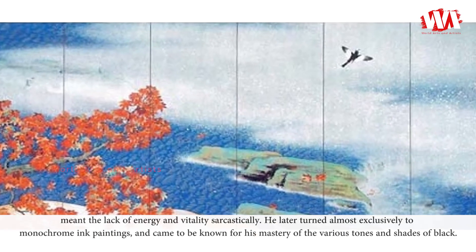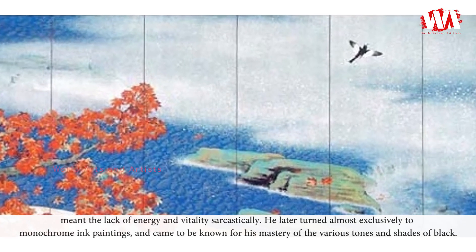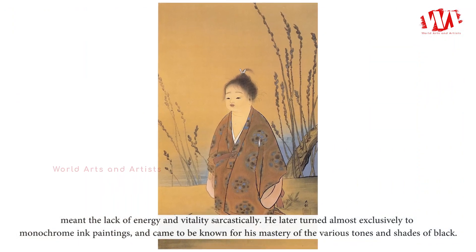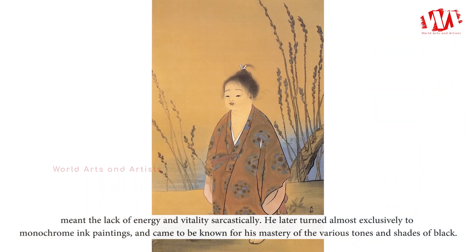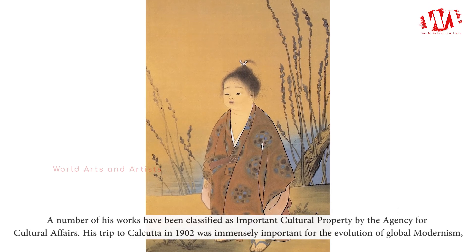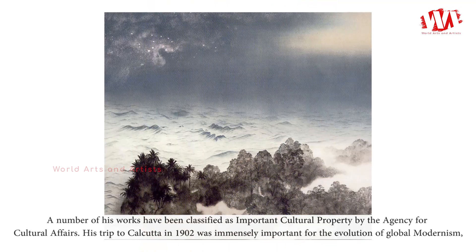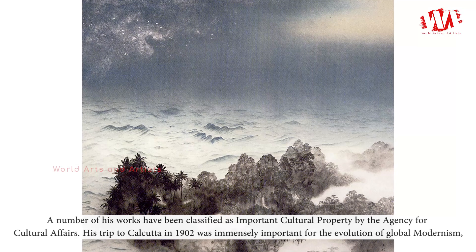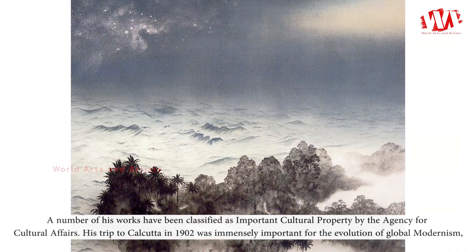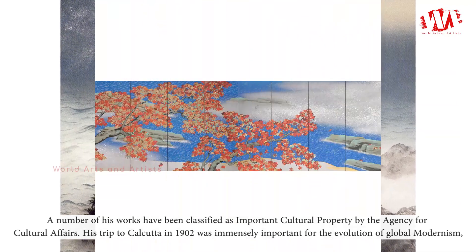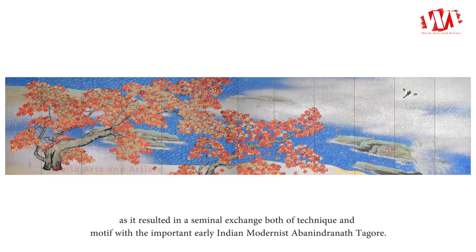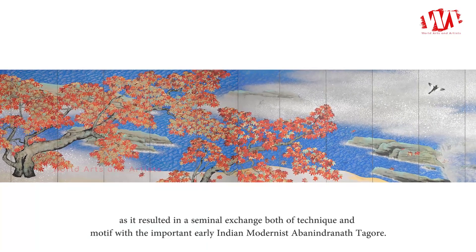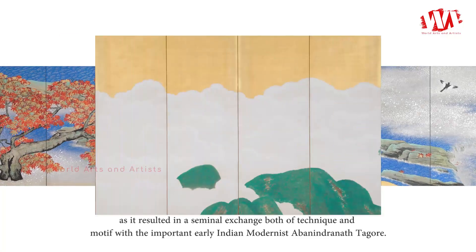Such cutting-edge technique was severely criticized by other traditional painters — his style was sarcastically called 'Morōtai,' meaning the lack of energy and vitality. He later turned almost exclusively to monochrome ink paintings and came to be known for his mastery of the various tones and shades of black. A number of his works have been classified as important cultural property by the Agency for Cultural Affairs. His trip to Calcutta in 1902 was immensely important for the evolution of global modernism, resulting in a seminal exchange of both technique and motif with the important early Indian modernist Abanindranath Tagore.